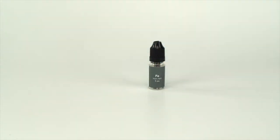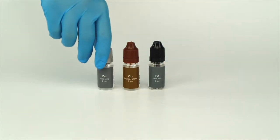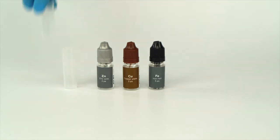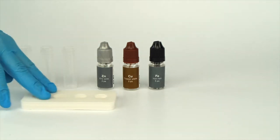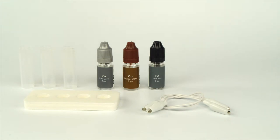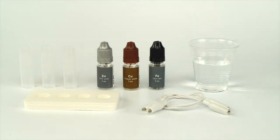For the stopping corrosion experiment, you will need the iron nails, copper plate, zinc wire, three vials, the vial stand, and the white crocodile clips from your experiment kit. Prepare a cup of water as well.